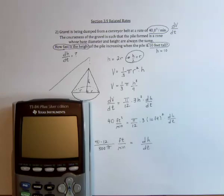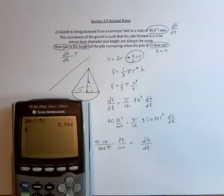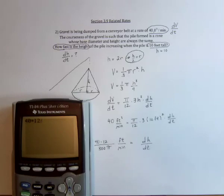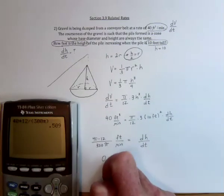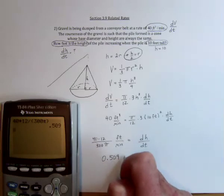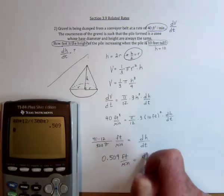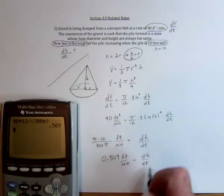So we've got 40 times 12 that gets divided by 300π, and the height is changing at about half a foot per minute, which sounds reasonable. So 0.509 feet per minute is how fast the height is changing with respect to time.